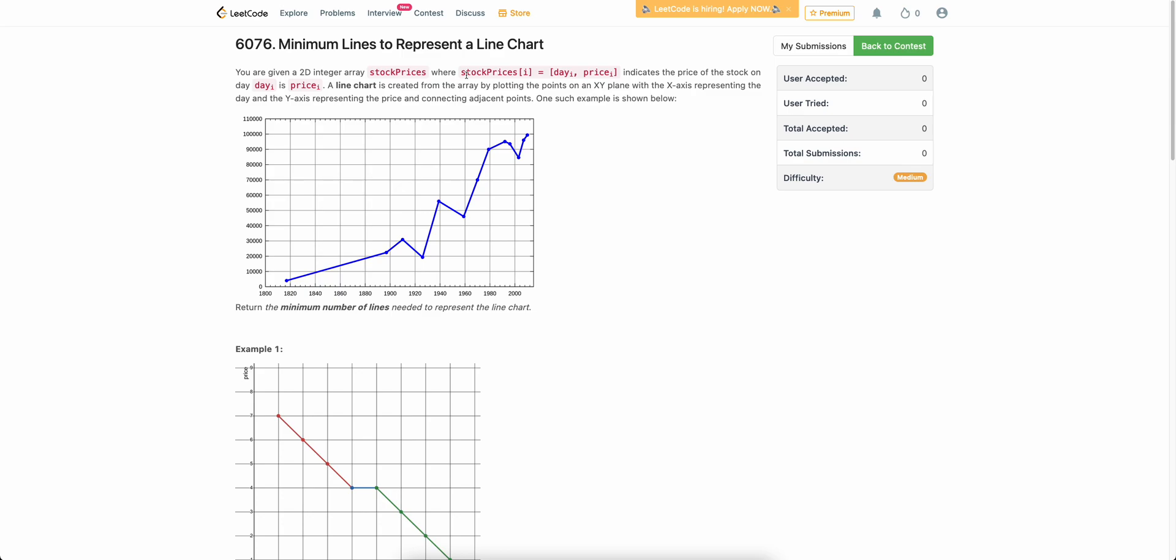We are given an array where each element contains two integers, day_i and price_i. What is the stock price on a particular day? And we need to find out the minimum number of lines needed to represent this in a line chart.